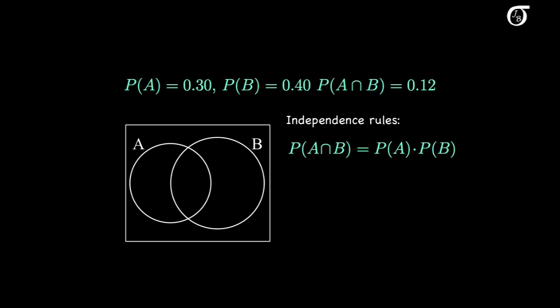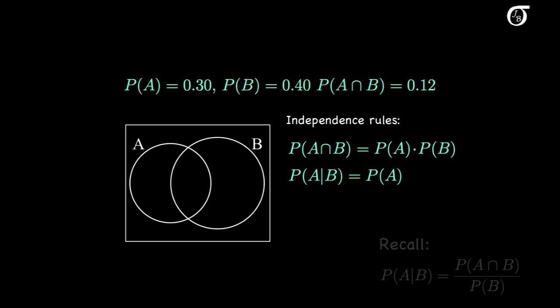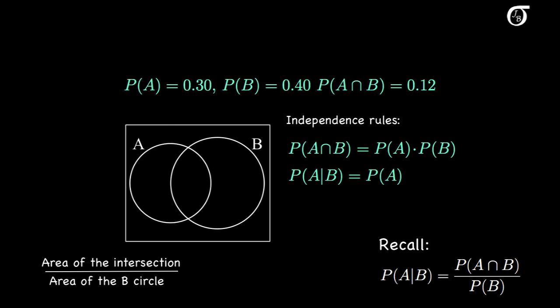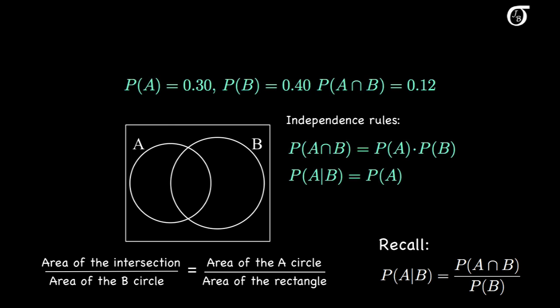It might be easier to visualize independence if we think about conditional probabilities. If A and B are independent, the conditional probability of A given B is just the probability of A. In general, the probability of A given B is the probability of the intersection of A and B over the probability of B. So in this plot, independence means that the ratio of the area of the intersection to the area of the B circle is equal to the ratio of the area of the A circle to the area of the entire rectangle.